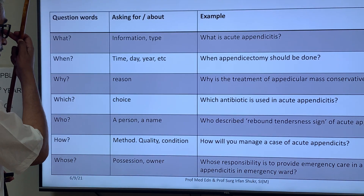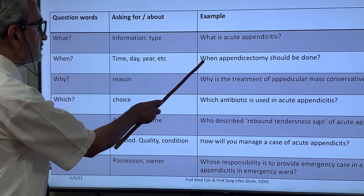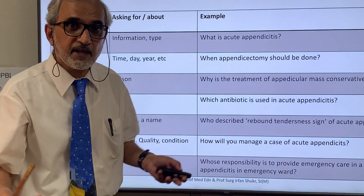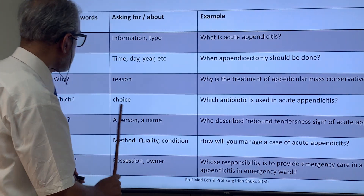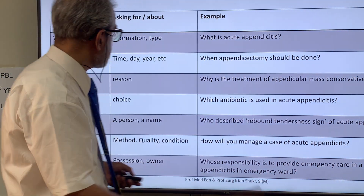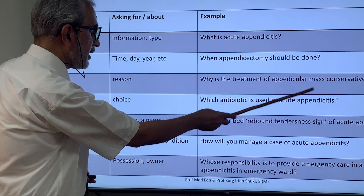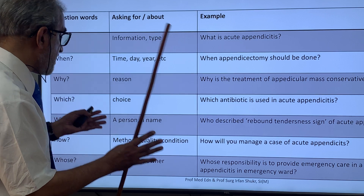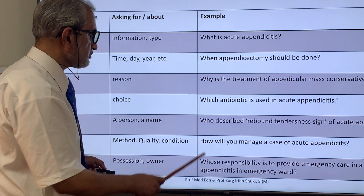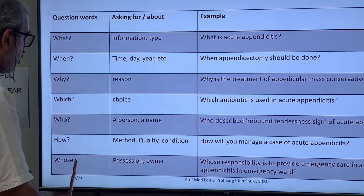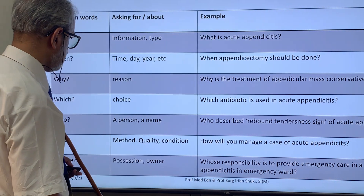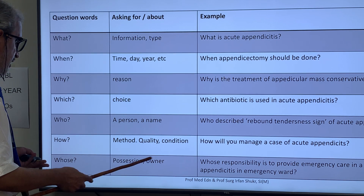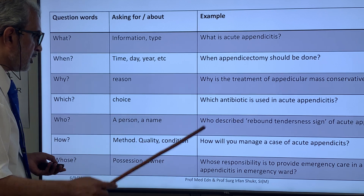'What' asks for information. 'When' is related to time — when something should be done. 'Why' asks for a reason — why something has happened. 'Which' is used when choosing among options, such as which antibiotic to use. 'Who' asks for a name or person — for example, who described a clinical sign. 'How' refers to a method — how you would manage a case. 'Whose' describes ownership or possession; 'who' and 'whose' are closely related.